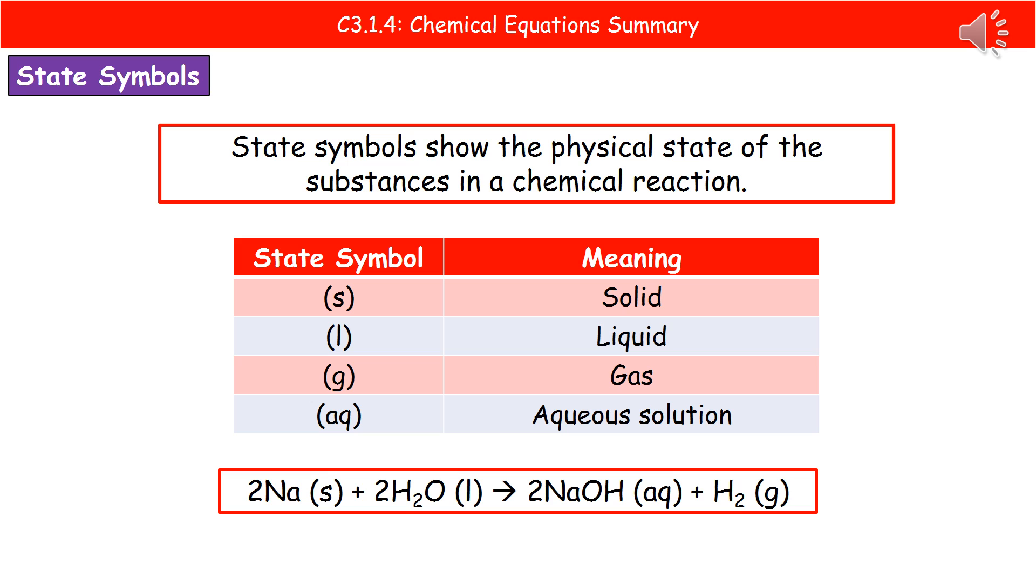The last thing we need to know about in terms of our chemical equations are what are called state symbols. A state symbol just tells us the physical state of any substance in that chemical reaction. There are four that we need to know. Three of them are very common, and we should know these ones from our particle model from our earlier chemistry topic.